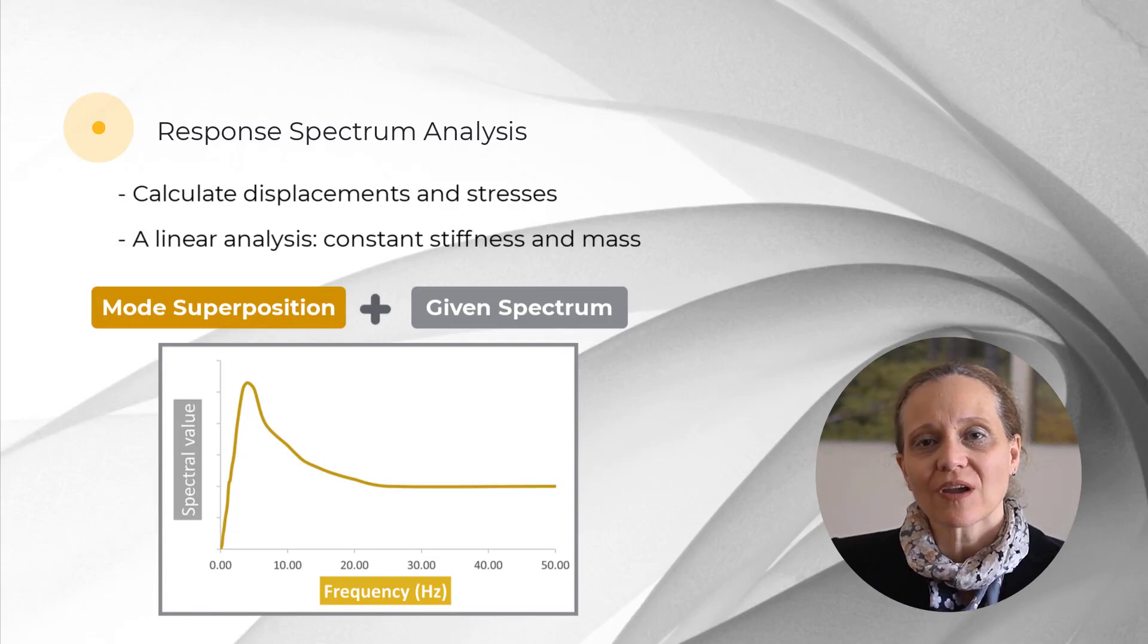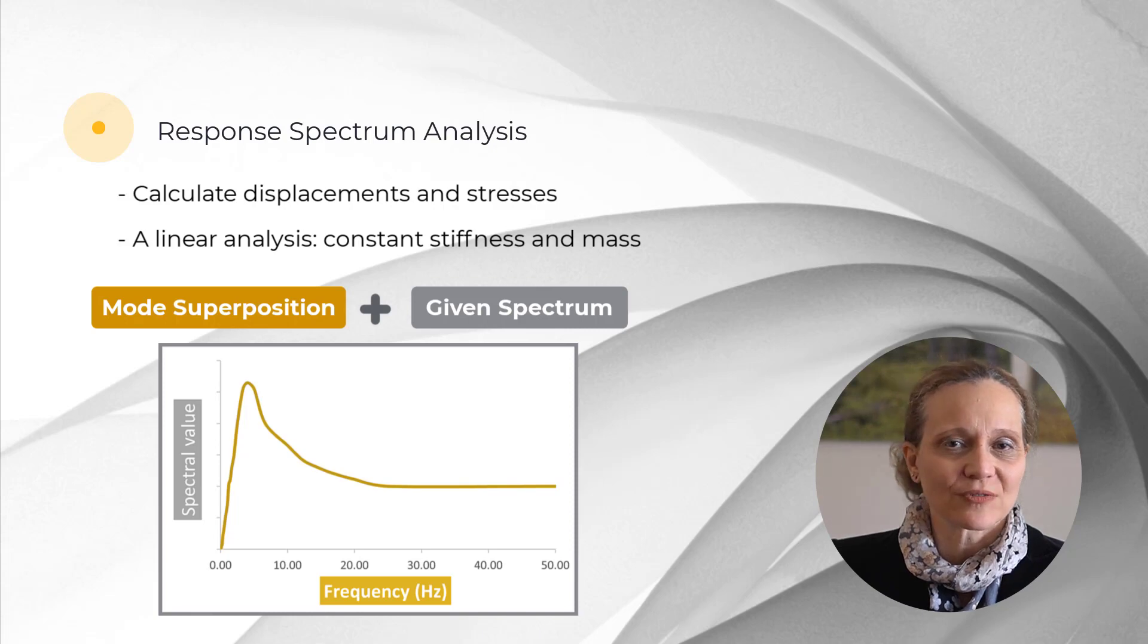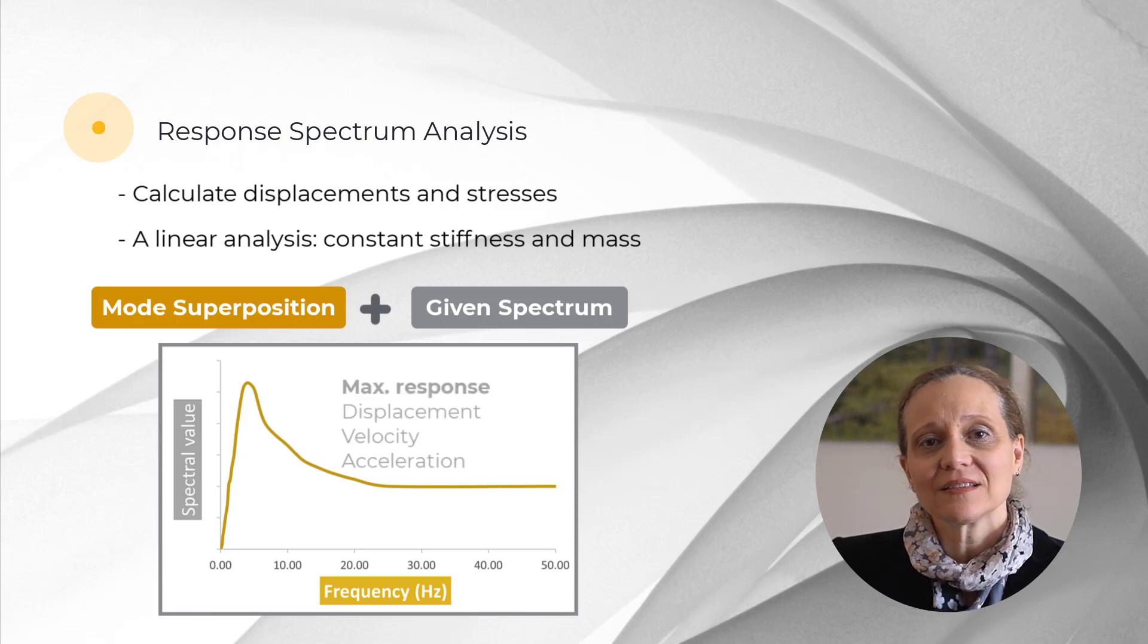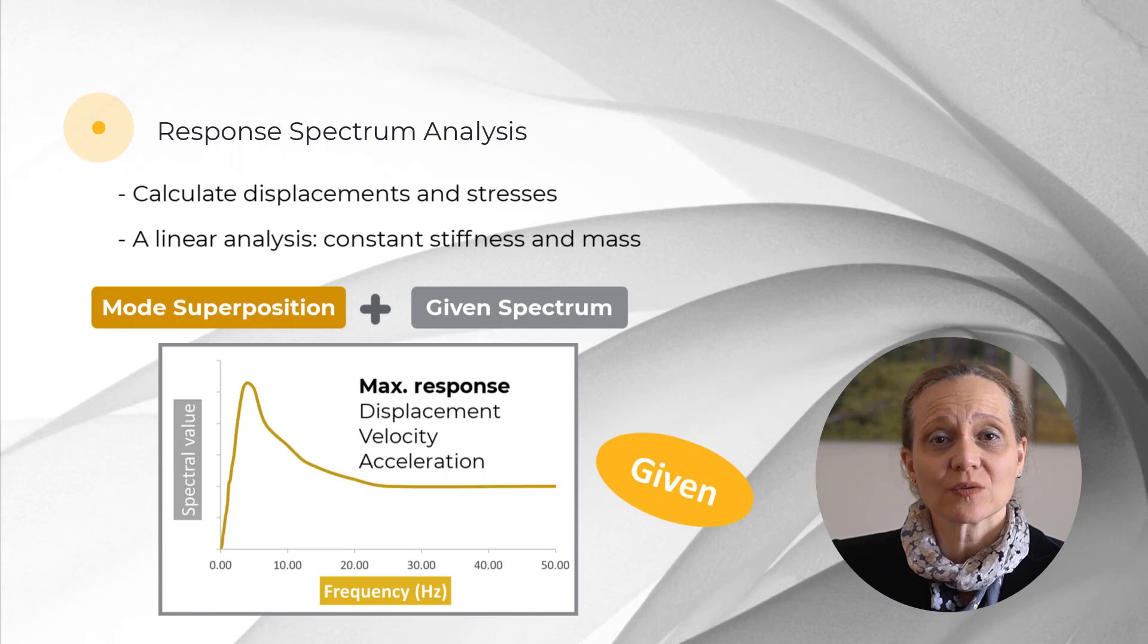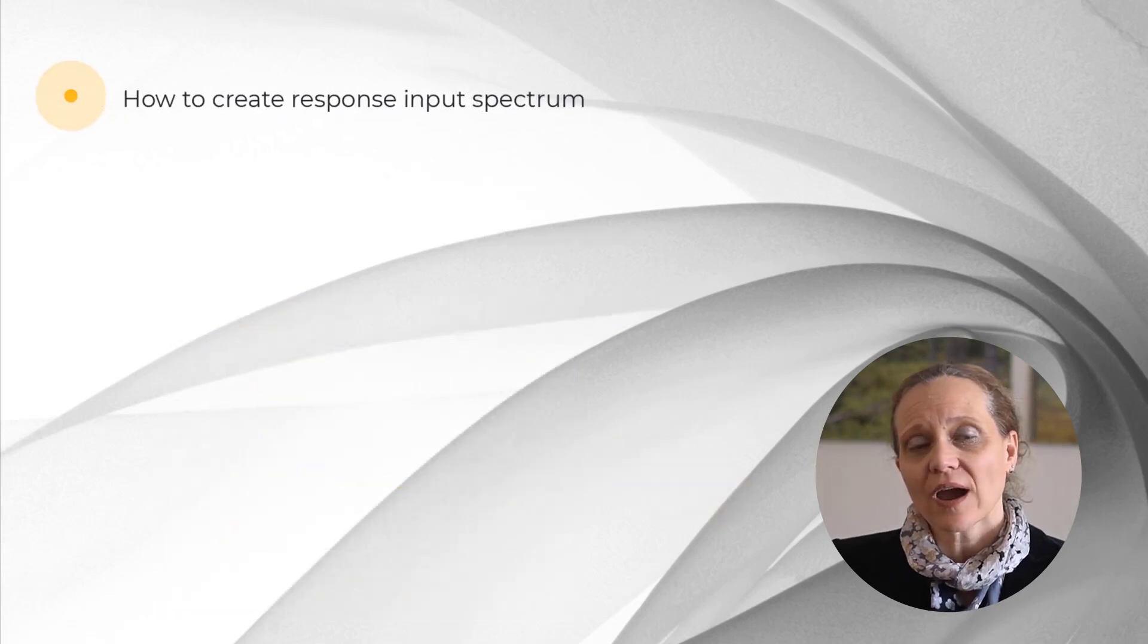On the response spectrum graph, the x-axis is the natural frequency of the system and on the y-axis is the maximum response such as displacement, velocity or acceleration. The response spectrum will usually be provided to the user. However, the process can be described as follows.